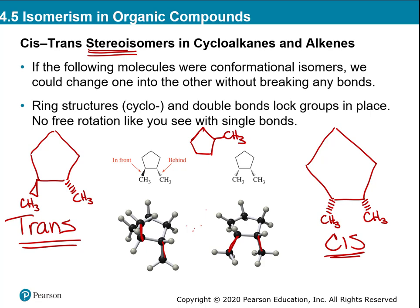They have to be on different carbons. If you had a cyclopentane with two methyls on the same carbon, one will be one way and one will be the other by necessity. You'd only use cis and trans if they're on different carbons. Look for two wedges or two dashes — that's cis. Look for a wedge and a dash — that's trans.